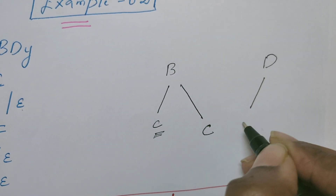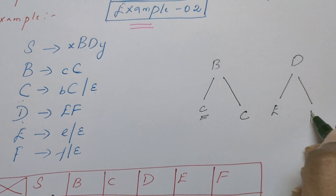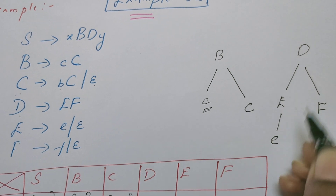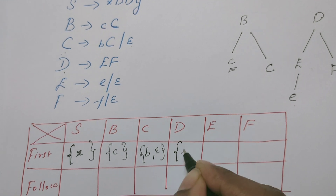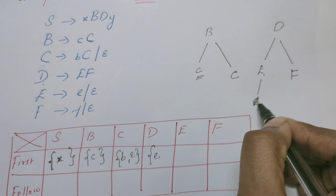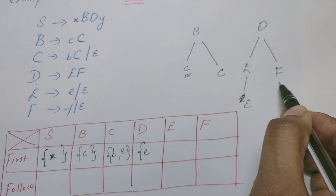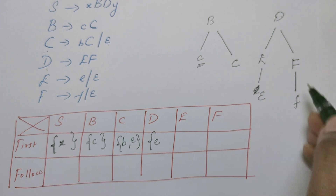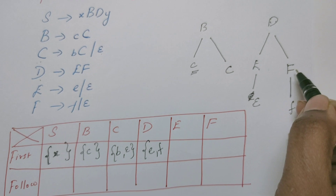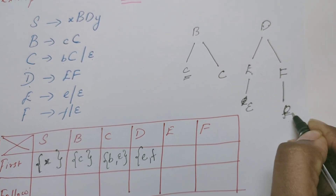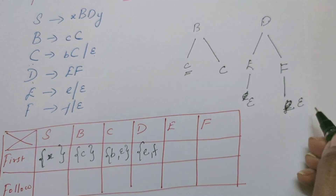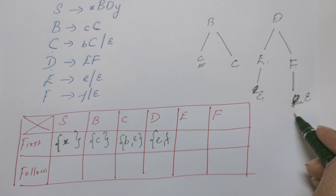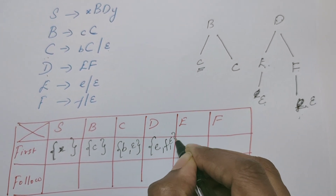Now let us move on to FIRST set of D. Let us draw the partial parse tree. D can be replaced by E and F. In place of E we could replace it by terminal E or epsilon. If we replace E, then FIRST of D contains E. But if we replace E by epsilon, then FIRST of D should be computed from F. The definition for F is terminal F, and F can also be replaced by epsilon. So E and F can both produce epsilon, meaning D indirectly produces epsilon. So FIRST of D contains epsilon also.